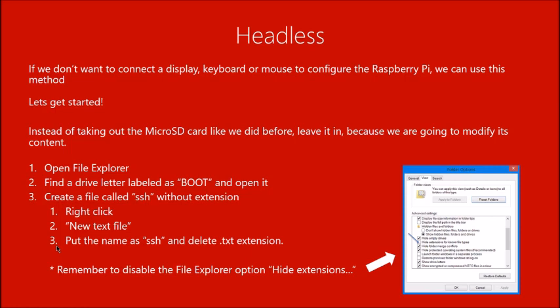Now that we've completed the first method — the manual method — to connect to our Raspberry Pi, we'll have finished and can connect to it. But before continuing, I'll describe the headless method, which accomplishes everything we just did without actually connecting any component to the Raspberry Pi. The Pi will connect to the network on its own and SSH will be enabled by default.